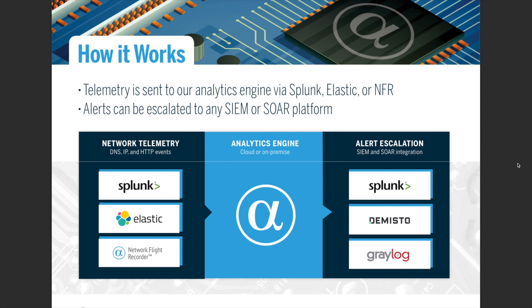These are basically plug-and-play, extremely straightforward integrations. We can escalate alerts to any SIM or SOAR platform. Network Flight Recorder can pull down alerts from the API in JSON format and ship them in CEF (Common Event Format) out to ArcSight, QRadar, or AlienVault — whichever SIM or SOAR platform you're using, we can ship that material into your legacy SIM software as well.